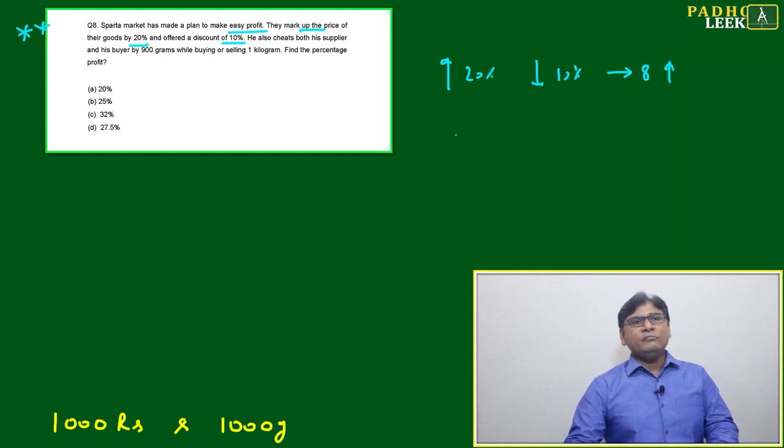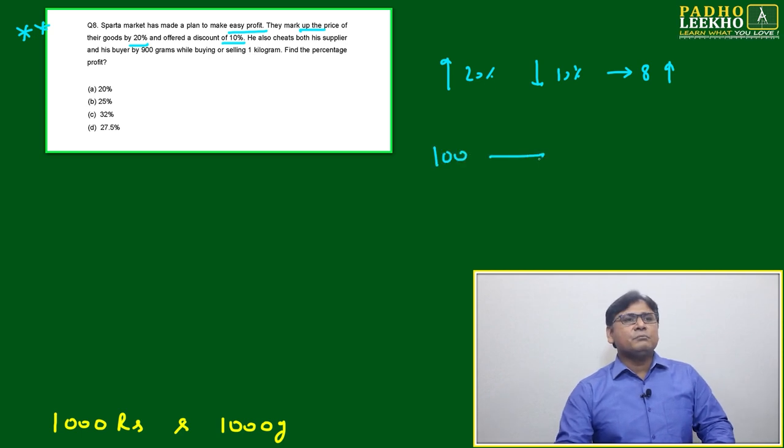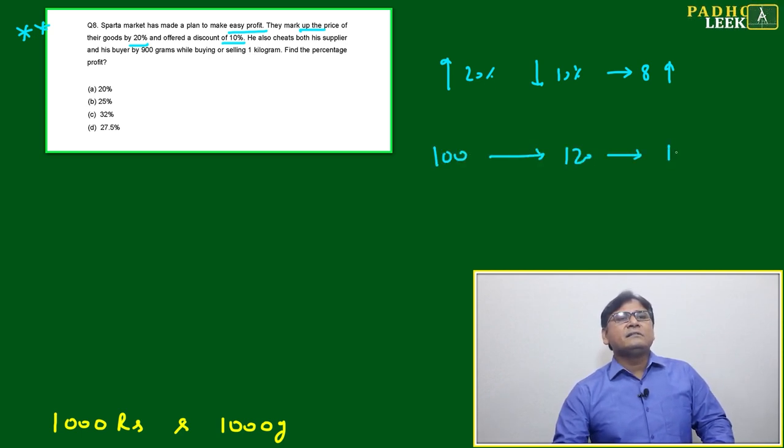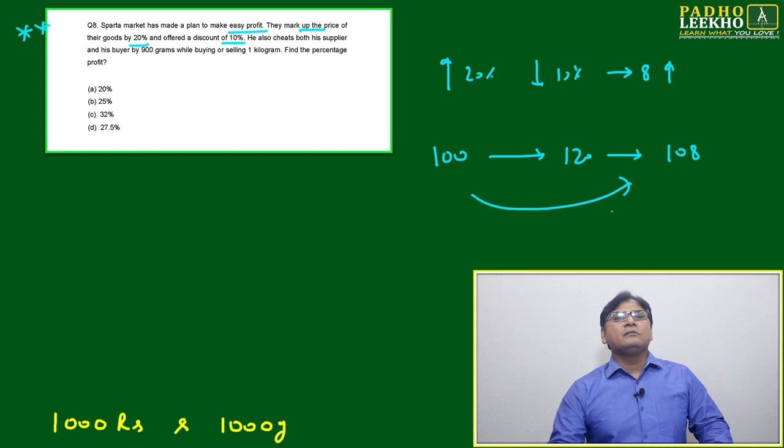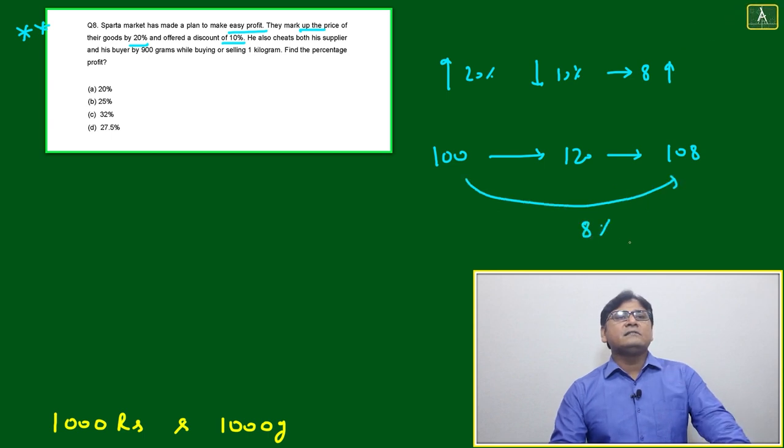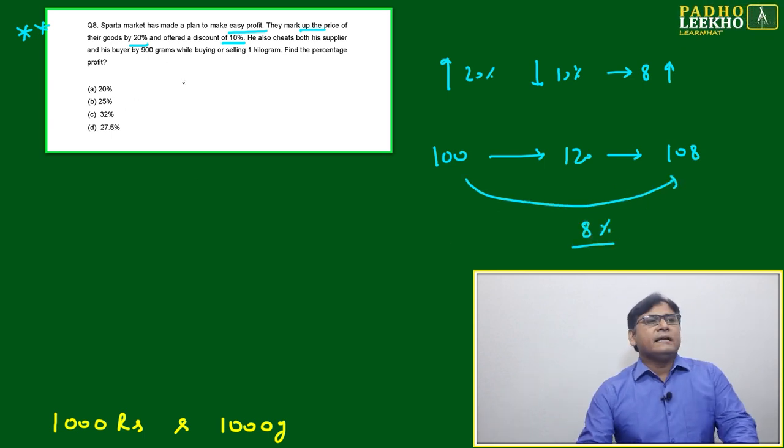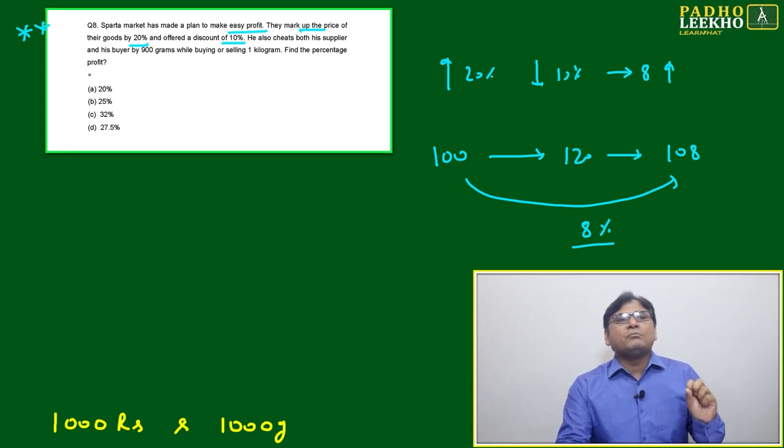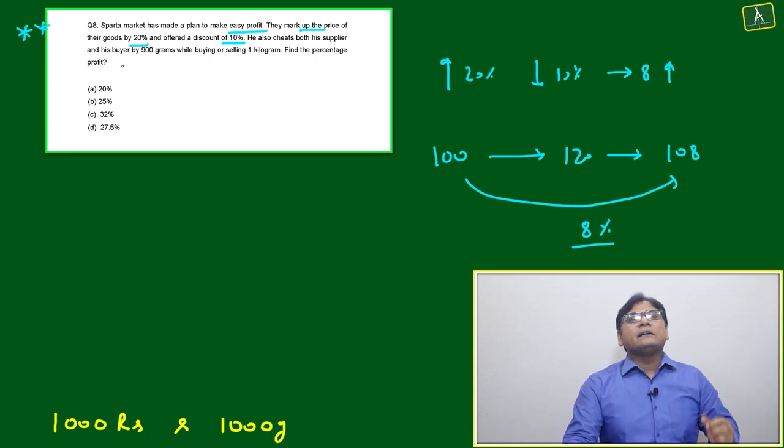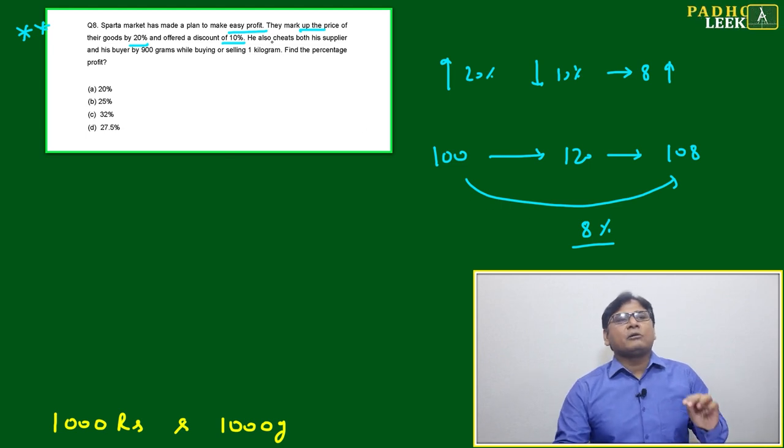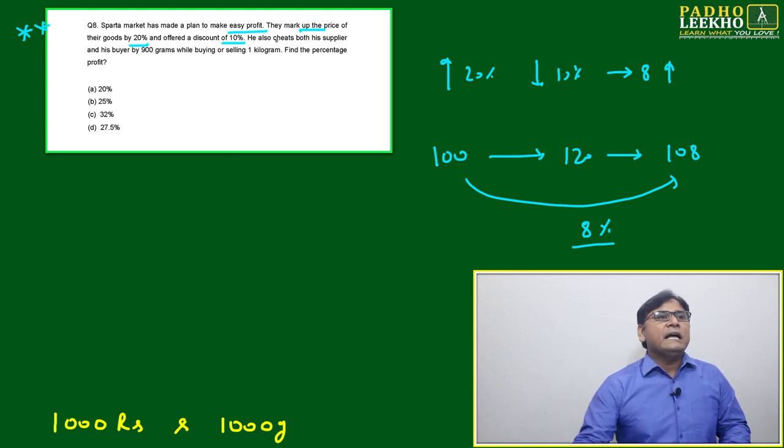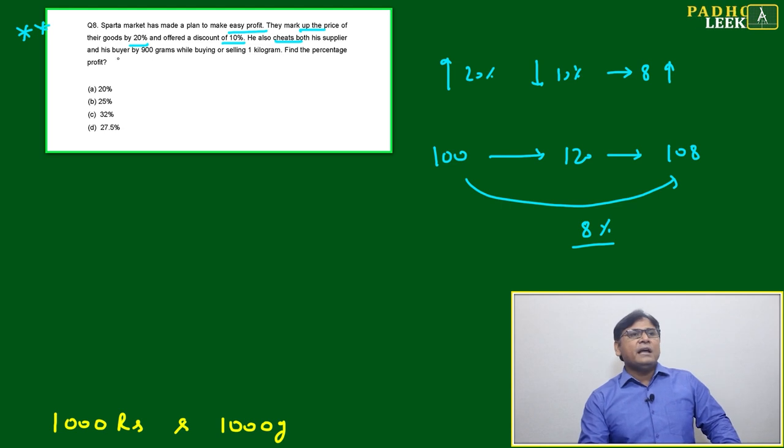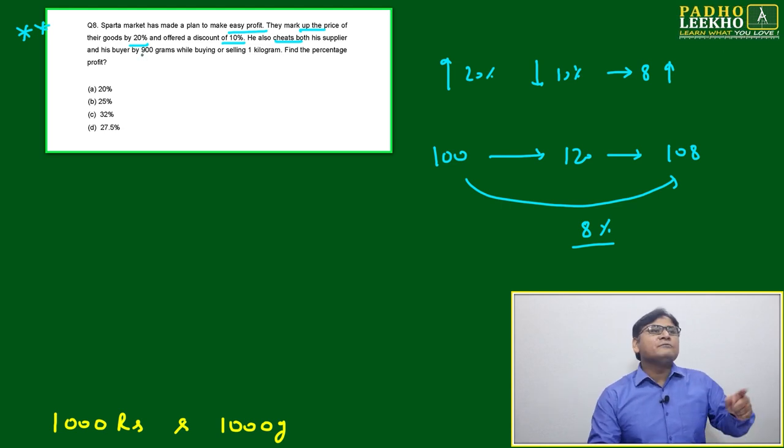Overall, the increase is 8% - from 120 to 10% gives 108, so 8% profit based on the markup and discount. Now another thing he is doing: he also cheats both the supplier and his buyer by 100 grams.